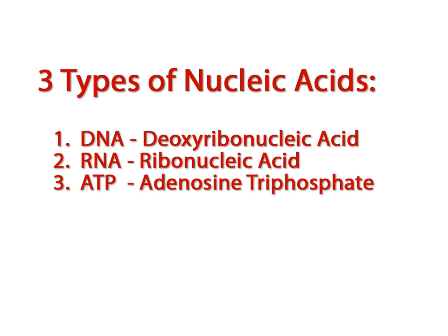There are three types of nucleic acid that you will need to know for this course. They are DNA or deoxyribonucleic acid, RNA or ribonucleic acid, and ATP. I'm not going to talk about DNA or RNA right now because each of these nucleic acids will be discussed in later units. So I just want to talk about ATP. You will need to know what the acronym ATP stands for, and that is adenosine triphosphate.